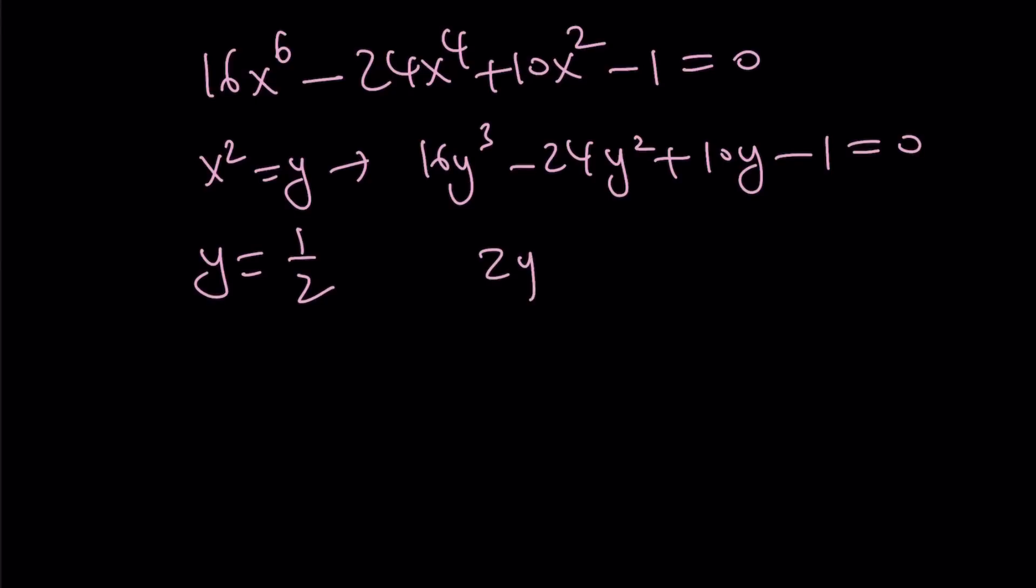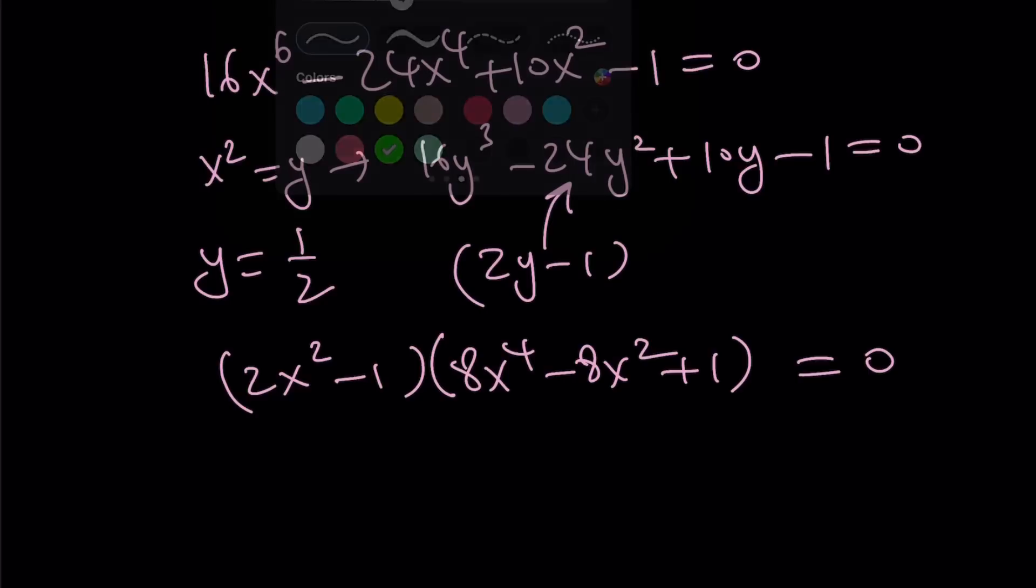you know, 2y minus 1 is a factor of this polynomial which means 2x squared minus 1 is a factor of the hexic equation and the other factor is going to be 8x to the 4th minus 8x squared plus 1. You could also find out by polynomial division and from here you're going to get,